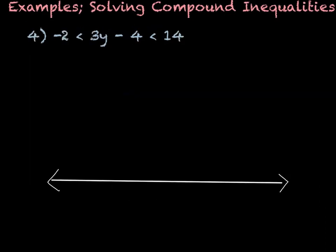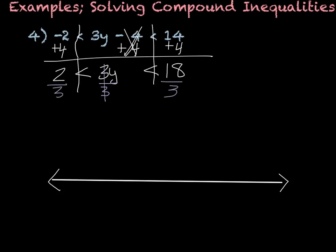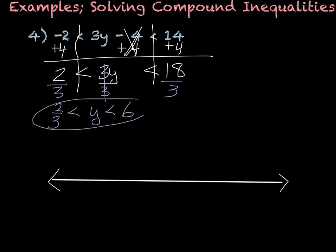In this next example we've got to do the same thing but with more steps. On every side of the inequality symbols, you need to do whatever is necessary to get everything away from the y. Starting by adding 4 to both sides — the 4s cancel, leaving 4 minus 2, which is negative 2 plus 4, which is 2, less than 3y, less than 14 plus 4 is 18. Then divide by 3, leaving 2 thirds is less than y, which is less than 6.